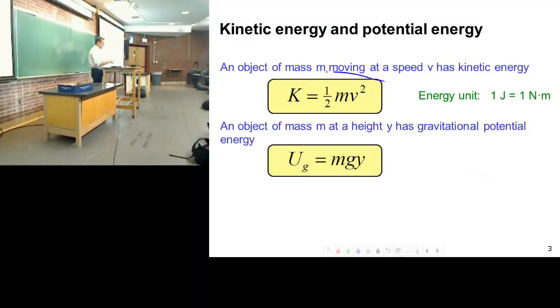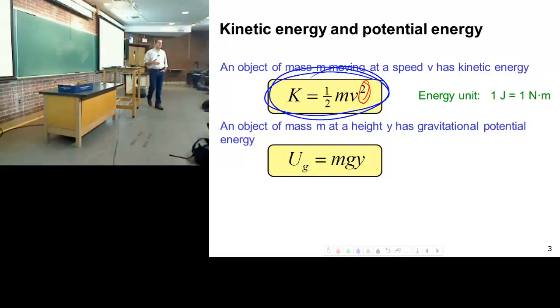Thing to remember though with this. Velocity is squared. So what does that mean? If I'm solving for velocity using kinetic energy, what is it going to give me? Positive or negative number? Always a positive number.